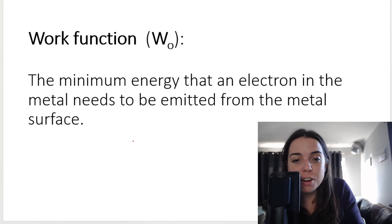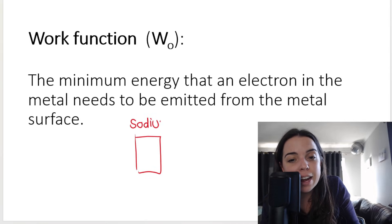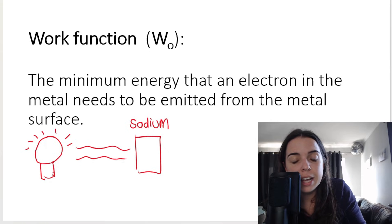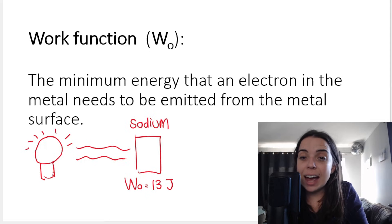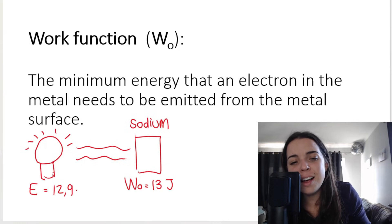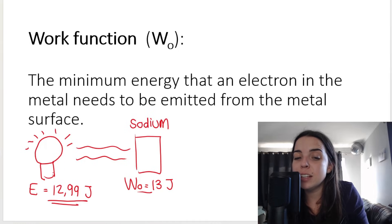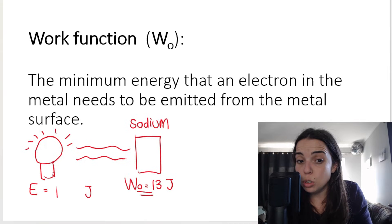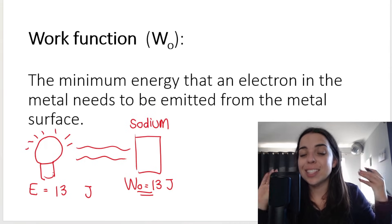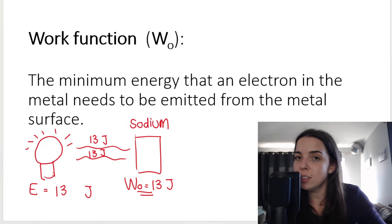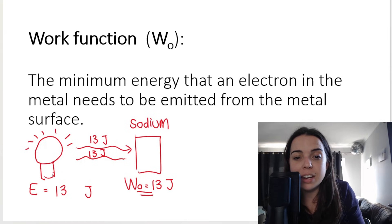For example, if my metal is sodium and I shine light onto the metal surface, let's pretend the work function of sodium is 13 joules. If my light has an energy less than 13 joules — even 12.99 joules — because the energy of the light is less than the work function, no electrons will be ejected. However, as soon as the energy of the light equals 13 or is greater than 13, there's enough energy to allow the electrons to escape from sodium. The incident photons — the photons in the light shining on the metal — if they have an energy of 13 or more, then electrons will be ejected from the surface of the metal.